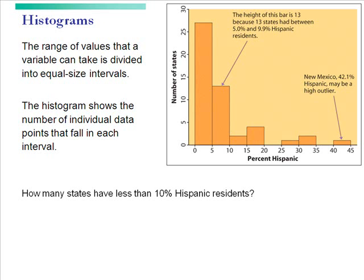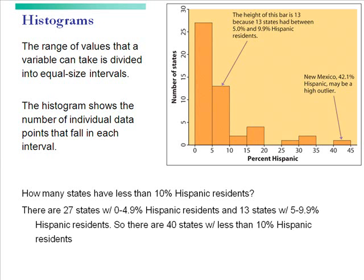Here's a quick question: How many states have less than 10% Hispanic residents? To calculate that, you would estimate how many have between 0 and 5% Hispanic residents and how many have between 5 and 9.9%. So you would get 27 states with 0 to 4.9% and 13 states with 5 to 9.9%, for 40 states altogether with less than 10% Hispanic residents.